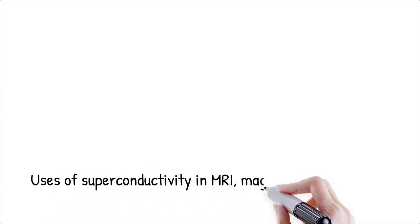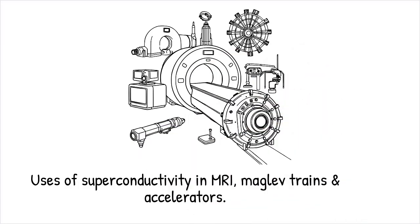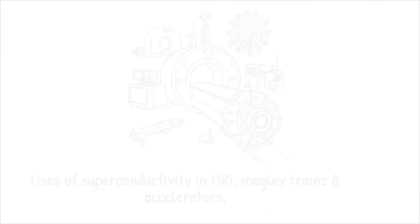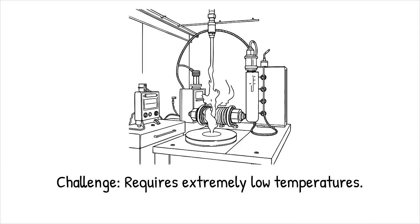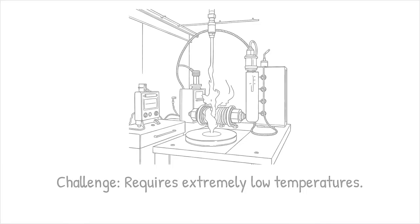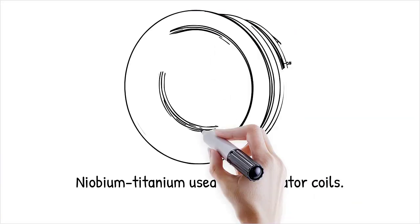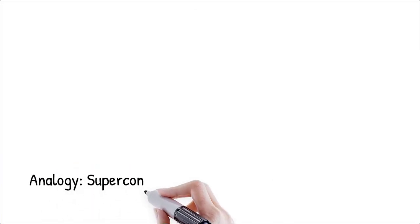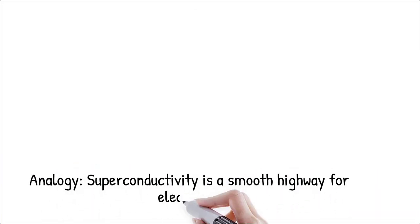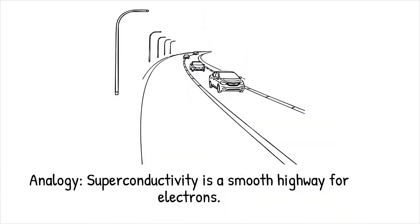Superconductivity is widely used in technology, such as in MRI machines, maglev trains, and particle accelerators. The challenge is that most superconductors require extremely low temperatures, though high-temperature superconductors are an active area of research. Niobium titanium is a superconducting material used in the magnetic coils of particle accelerators. Superconductivity is like a perfectly smooth highway where cars, electrons, can travel endlessly without hitting potholes, resistance.